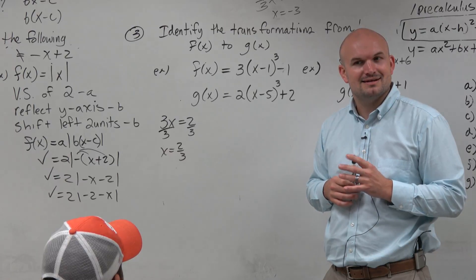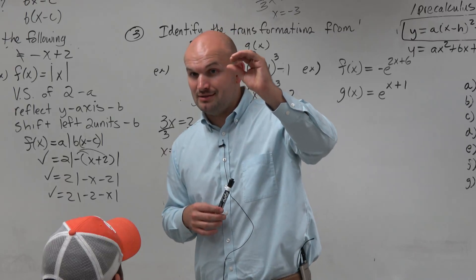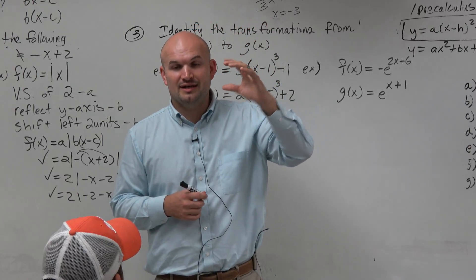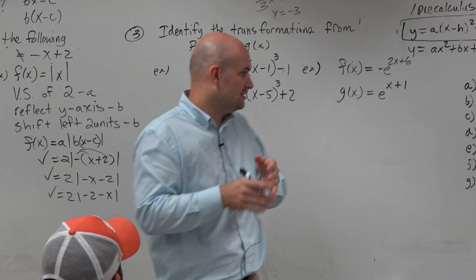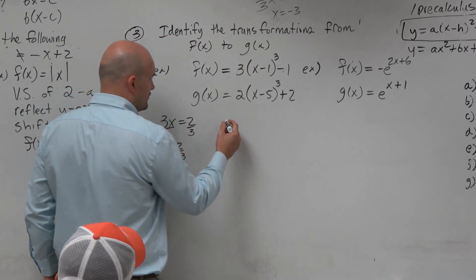Compression. Well, remember, the definition is if it's larger than 1, greater than 1, it's a stretch. And if it's between 0 and 1, it's a compression. So 2 thirds is obviously less than 1. It is a vertical compression.